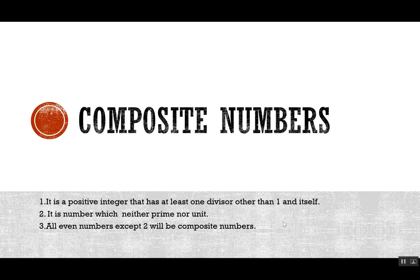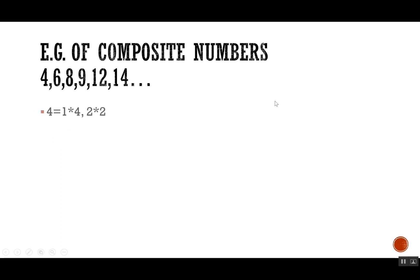Now let's look at composite numbers. A composite number has three conditions: it is a positive integer that has at least one divisor other than 1 and itself, it is a number which is neither prime nor unit, and all even numbers except 2 will be composite numbers.